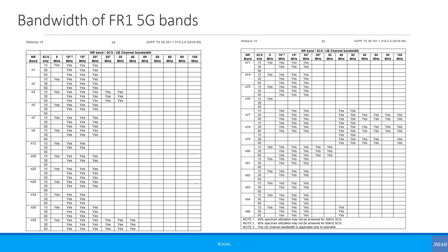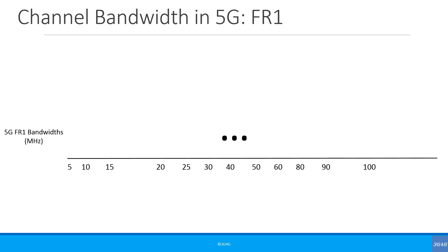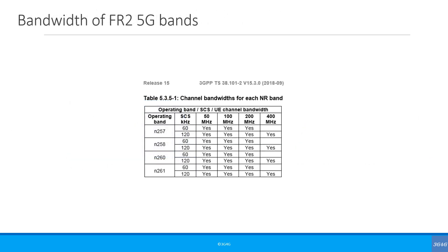The most popular coverage layer band, Band 28, supports bandwidths of 5, 10, 15, and 20 MHz. If you look at the most popular capacity layer band, N77 or N78, you will see that it covers most of the defined bandwidths from 10 MHz to 100 MHz. To summarize, 5G FR1 bandwidths go from 5 MHz to 100 MHz. For Frequency Range 2, the supported bandwidths are 50, 100, 200, and 400 MHz.